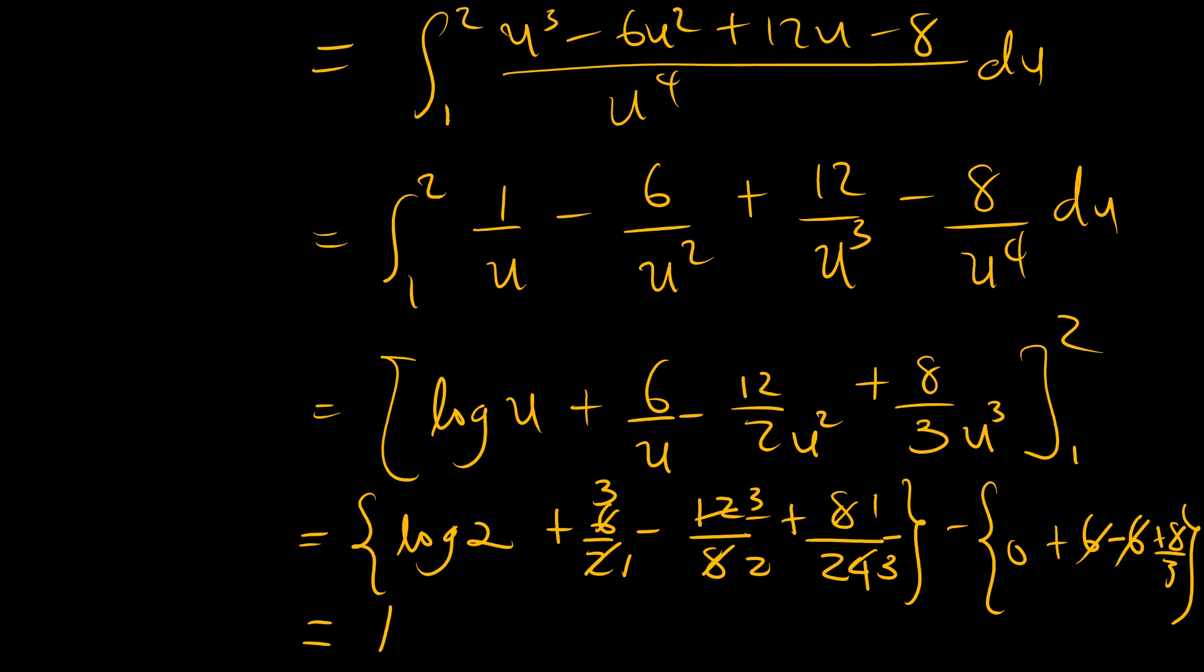Essentially, we have log 2 plus 3 minus 3/2 plus a third minus 8/3. With common denominator, minus 8 plus 1 is negative 7, so 6 minus 3 is 3, so you have 3/2. We can just say this is log 2 plus 3/2 minus 7/3, and that's the answer.